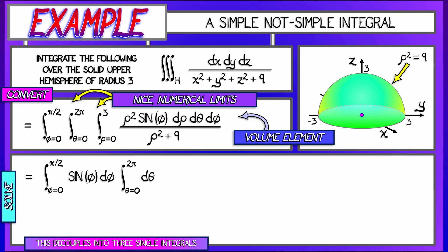That's nice. Then I have the integral of d theta from 0 to 2 pi, also nice. Lastly, the integral of rho squared over rho squared plus 9 d rho.